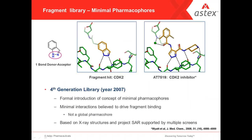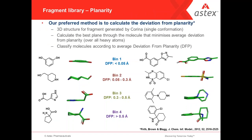Another thing we looked at from about 2007 onwards is the concept of minimal pharmacophores. A minimal pharmacophore is an interaction pattern that drives at least most of the binding of a particular fragment. In the case of CDK2, it forms a nice donor-acceptor hydrogen bond pair motif with the hinge, and within the molecule itself that is done via a one-bond donor-acceptor pair — so we call this minimal pharmacophore a one-bond donor-acceptor. We expect this minimal pharmacophore to be retained as we grow the compound, because we think it's very important.